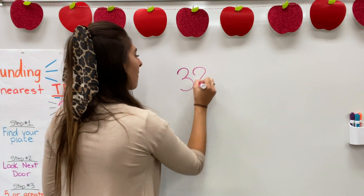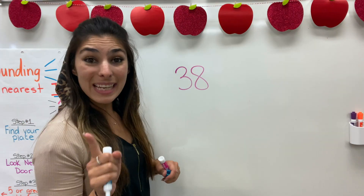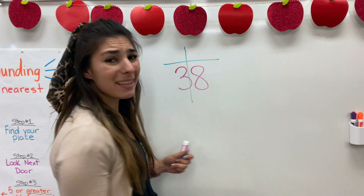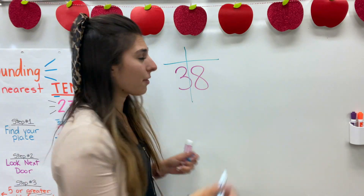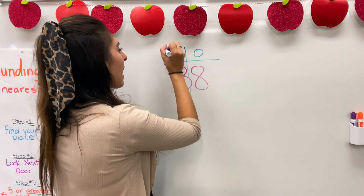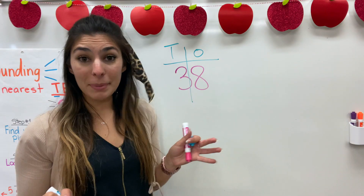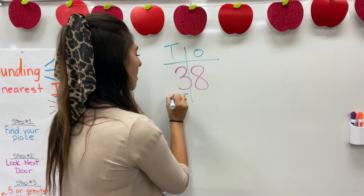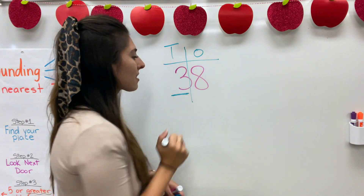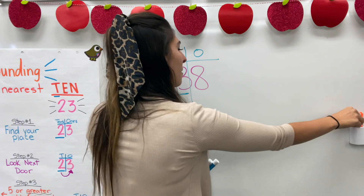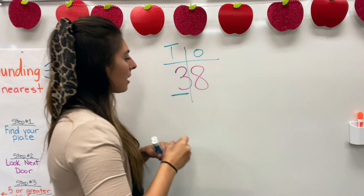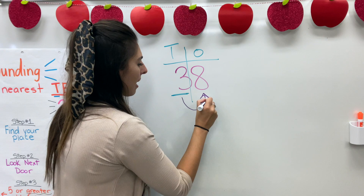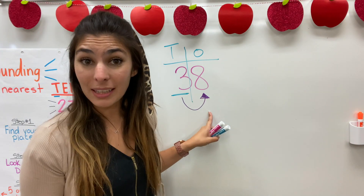So if we have the number 38, step one is going to be find my place, and that means place value. We always start with our ones, and because we're rounding to the nearest ten, we're going to underline the number in the tens place, which is the three.